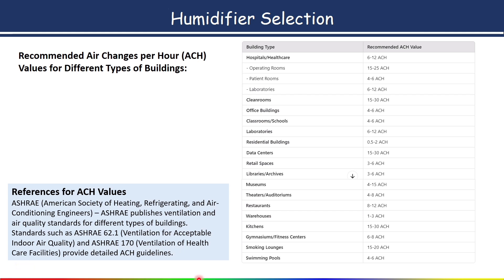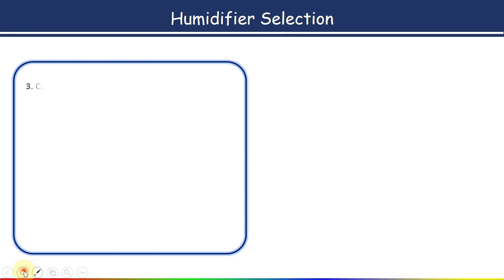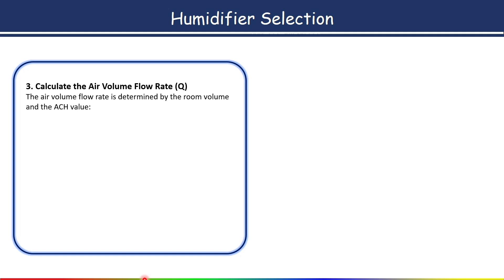So to recap: the first step is to calculate the room volume in cubic feet, and the second step is to determine the ACH value. The third step is to calculate the air volume flow rate. The formula is: Q equals room volume in cubic feet multiplied by ACH, divided by 60. This gives the air volume flow rate in cubic feet per minute (CFM).